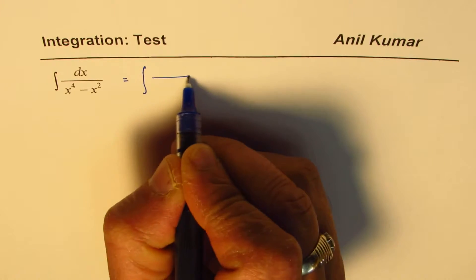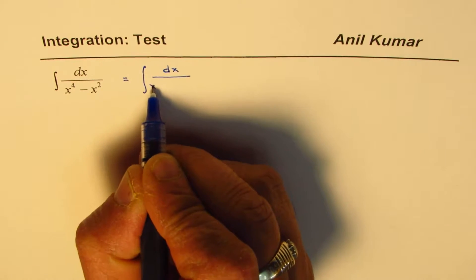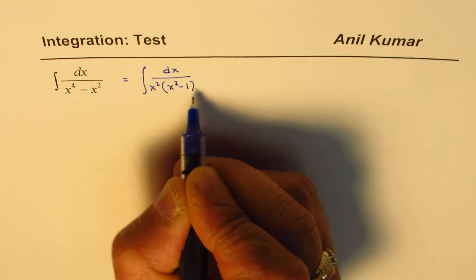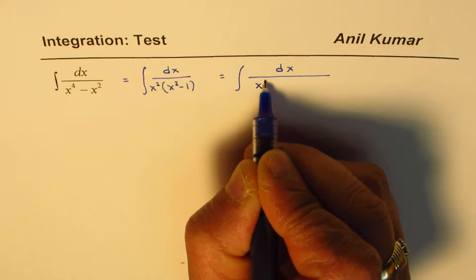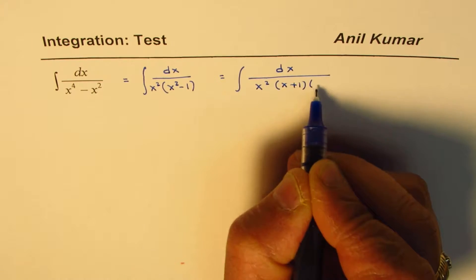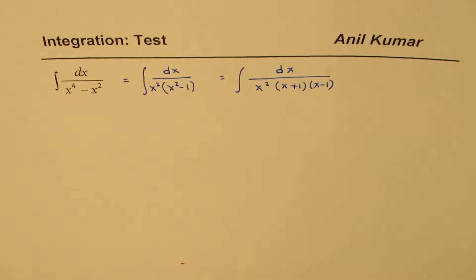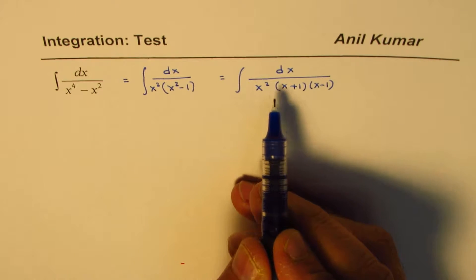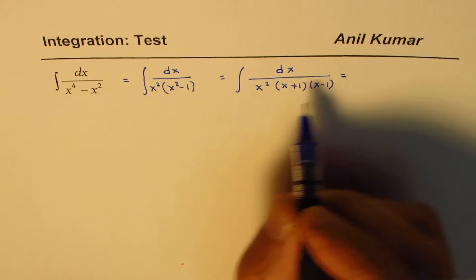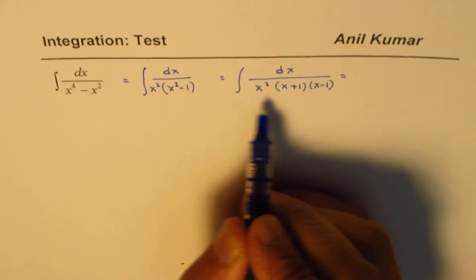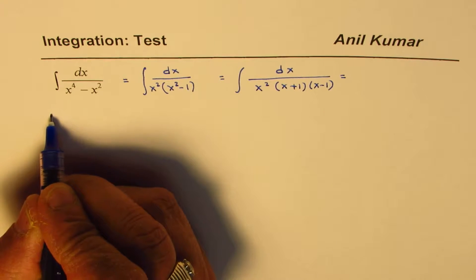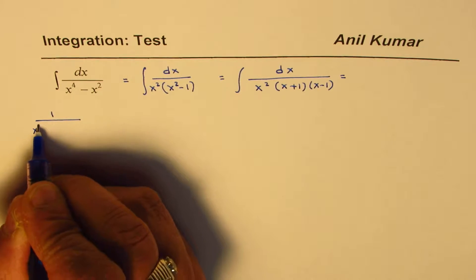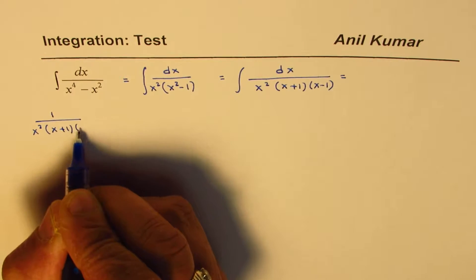Let me factor the denominator. We could write this as the integral of dx over — if I take x squared common, we get x squared times x squared minus 1. This could also be written as the integral of dx over x squared times (x plus 1) times (x minus 1). So 1 over x squared times (x plus 1) times (x minus 1).